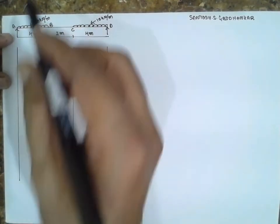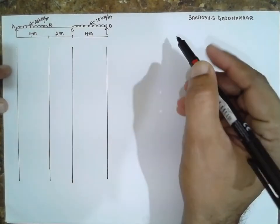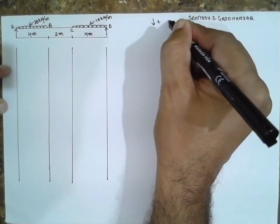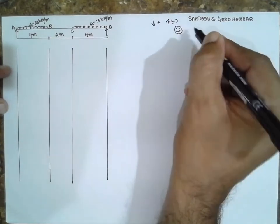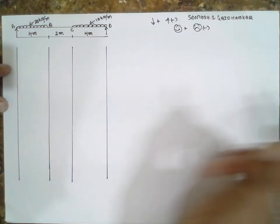This is a simply supported beam having UDL, 10 kN and 20 kN. Downward is positive, upward is negative, sagging is positive, hogging is negative.